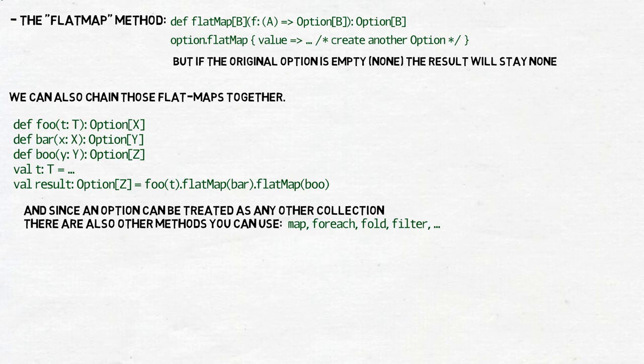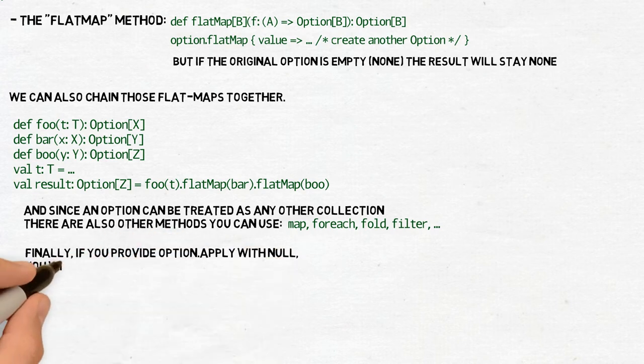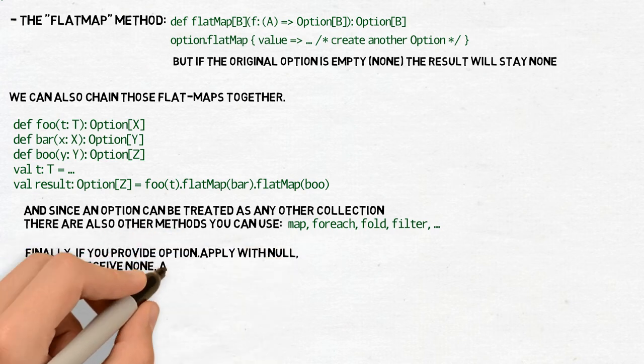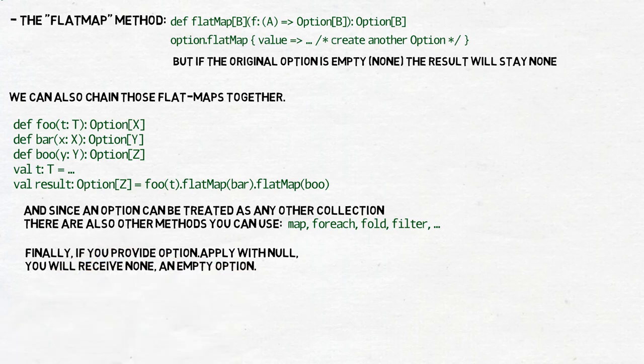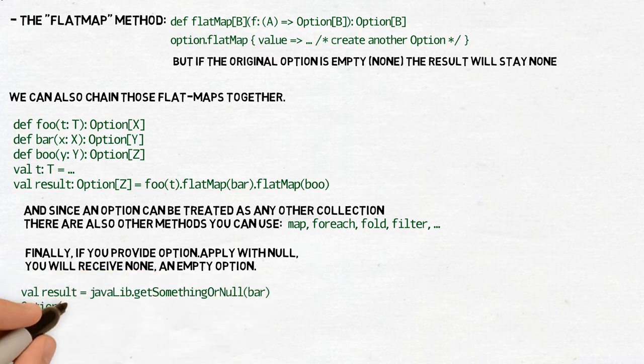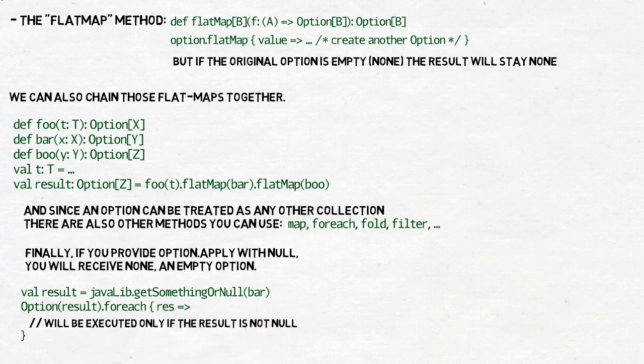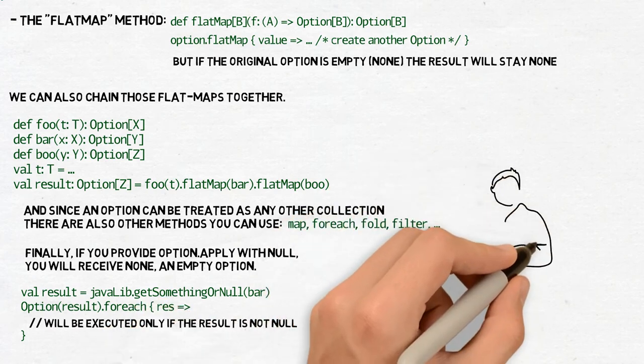Even if sometimes it feels a bit weird to use them on a collection which you know that it may have at most one element. And finally, in Scala there is a special case. If you provide the option constructor with null as the element, you will receive none, an empty option. You should never do it explicitly. But sometimes it may happen that you receive a null as a result of calling a third-party library written in Java. If you are afraid that may happen, wrap the result of the call in an option and put your own logic inside option for each.